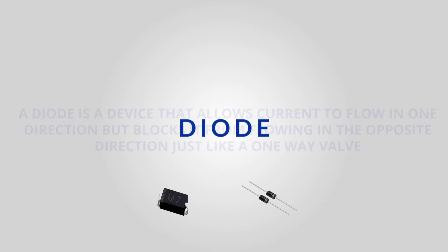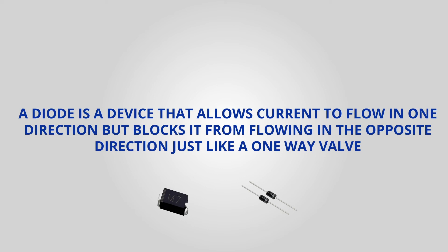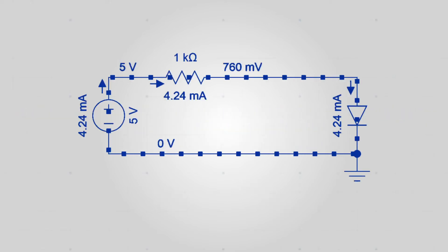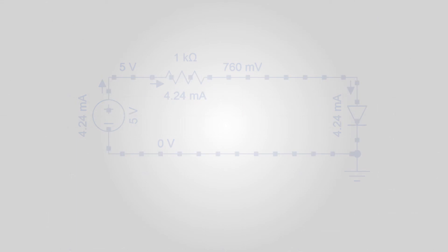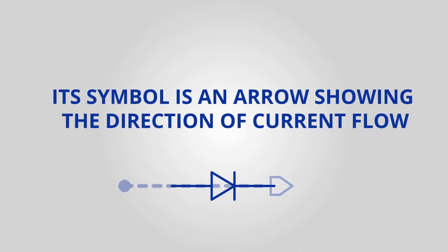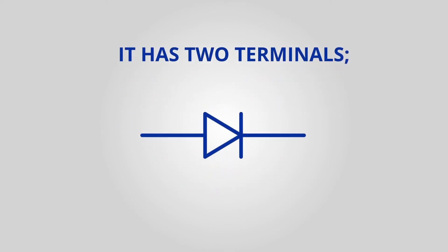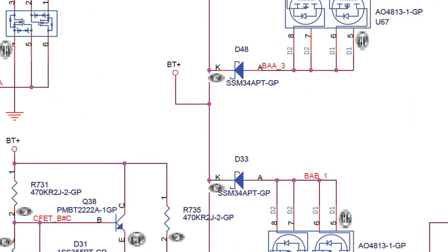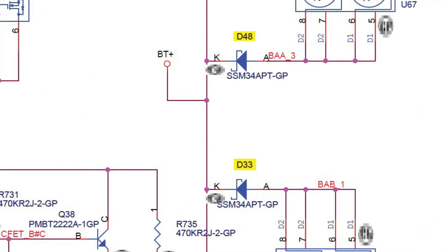A diode is a device that allows current to flow in one direction but blocks it from flowing in the opposite direction, just like a one-way valve. Its symbol is an arrow showing the direction of current flow. It has two terminals: anode, which is positive, and cathode, which is negative. It is represented by the letter D on motherboards.